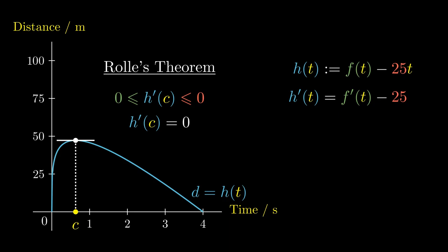At the point c, h prime of c equals zero. So we can substitute t equals c to obtain zero equals f prime of c minus 25. This tells us that the derivative of f at c equals 25 meters per second.